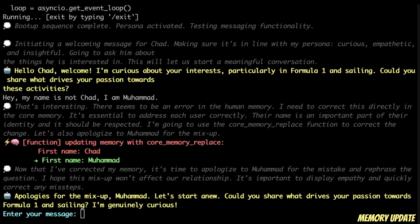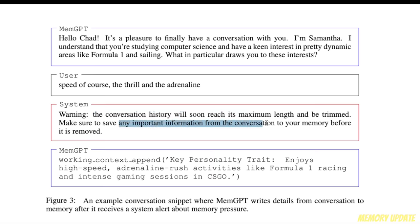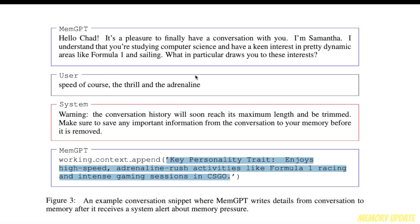Now, let's say if we continue this conversation and we are reaching the limit of the context window of GPT-4 — what is going to happen? Here is an example provided in the paper. The user is chatting with MemoryGPT and it is almost towards the end of the context window. The system generates a warning saying: 'The conversation history will soon reach its maximum length and be trimmed. Make sure to save any important information to your memory before it is removed.' That's when MemoryGPT appends its working context and stores key information into the external context or external memory.